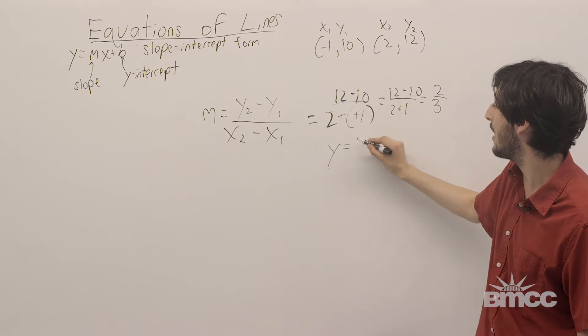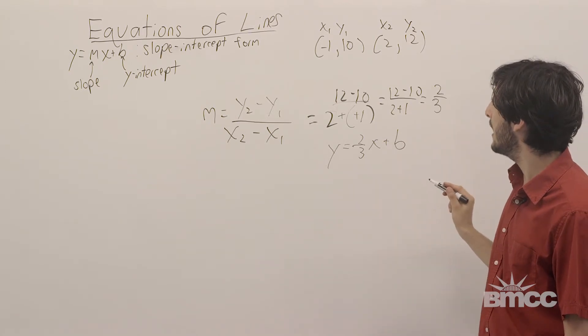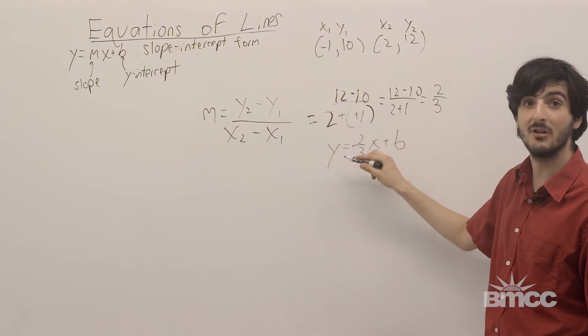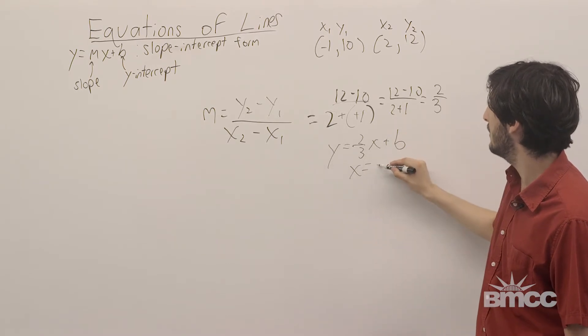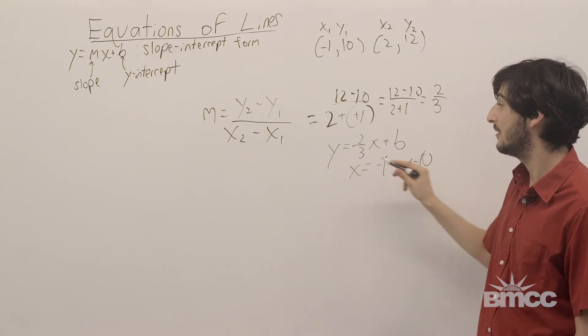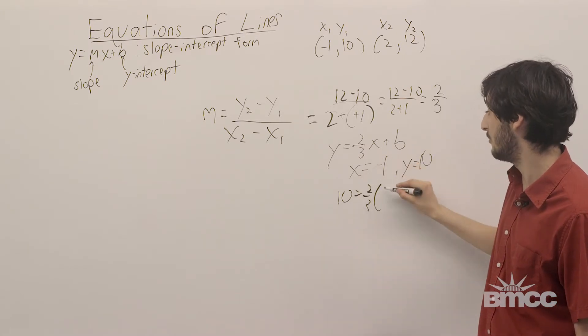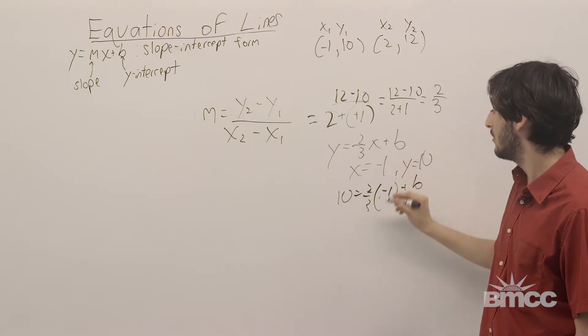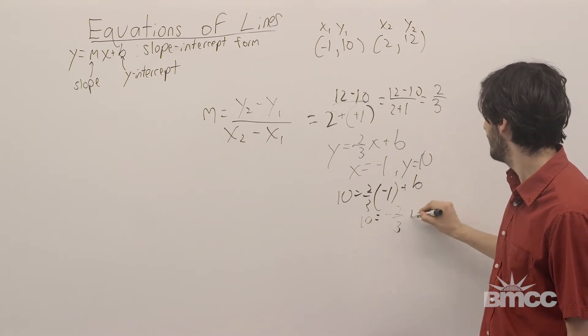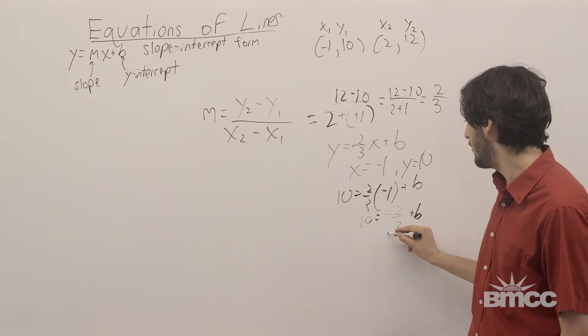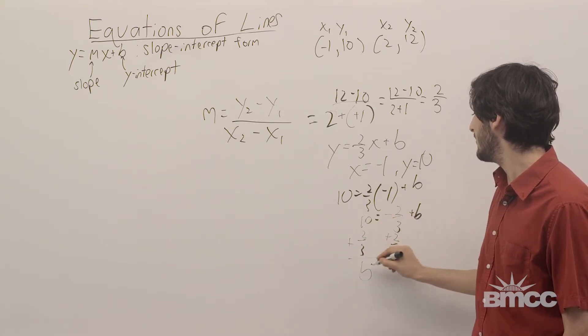So, we can write our equation y equals 2 thirds x plus b. So, now, we can choose either of these two points to plug in and solve for b. Let's do the first one. We're going to let x equal negative 1 and y equal 10. Plugging these two points in, we get 10 equals 2 thirds times negative 1 plus b. Or 10 is equal to negative 2 thirds plus b. And then adding 2 thirds on both sides, we get b is equal to 10 plus 2 thirds.